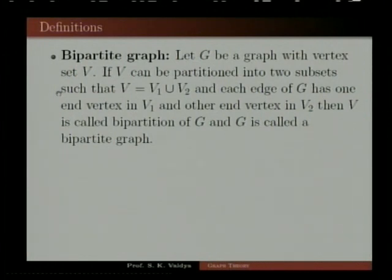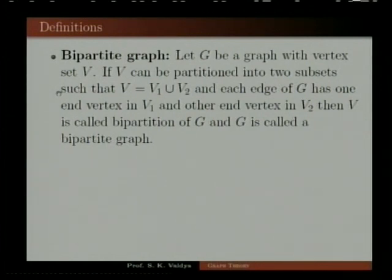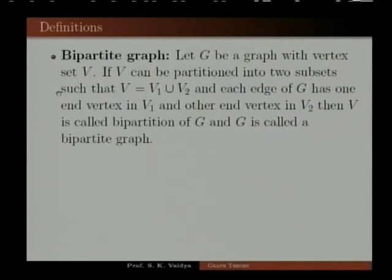Bipartite graph: let G be a graph with vertex set V. If V can be partitioned into two subsets such that V equals V1 union V2, and each edge of G has one end vertex in V1 and the other end vertex in V2, then V is called a bipartition of G and G is called a bipartite graph.